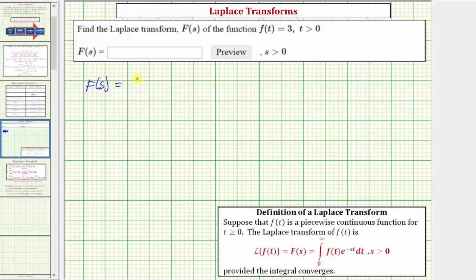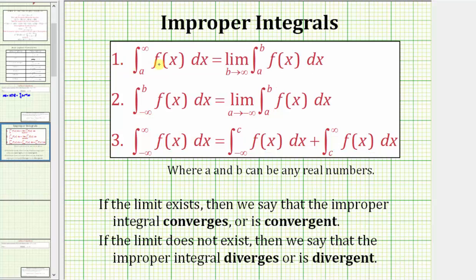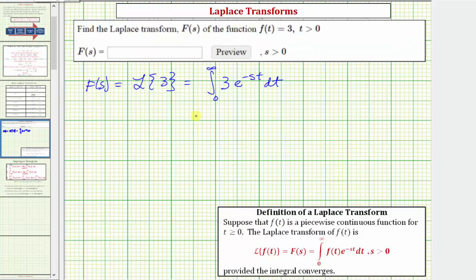So for this example, F of s is equal to the Laplace transform of three, which equals the integral from zero to infinity of three times e raised to the power of negative st dt. Because we have an improper integral, we need to rewrite this using limit notation. The integral from a to infinity of f of x dx equals the limit as b approaches infinity of the integral from a to b of f of x dx — we substitute b for infinity and introduce limit notation. So this becomes the limit as b approaches infinity of the integral from zero to b of three times e raised to the power of negative st dt.